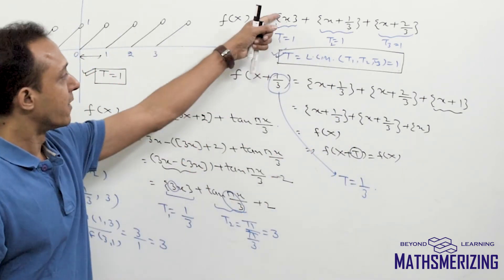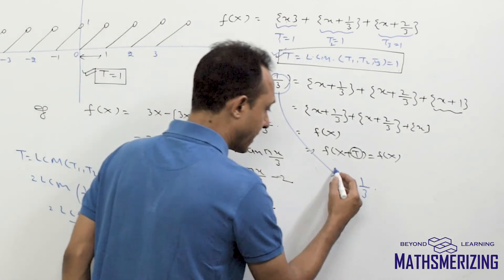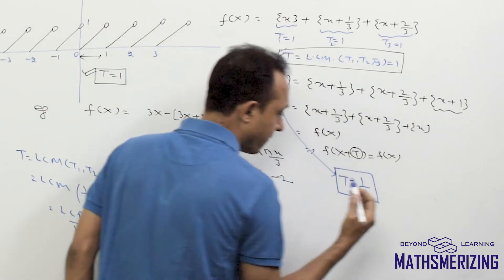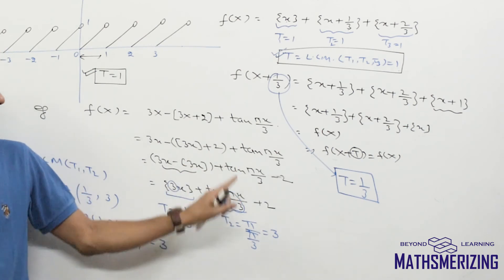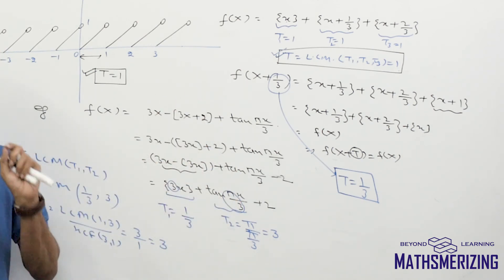So fundamental period for this function is not 1, but the fundamental period for this given function is 1 by 3. So this function is periodic and its value is 1 by 3.